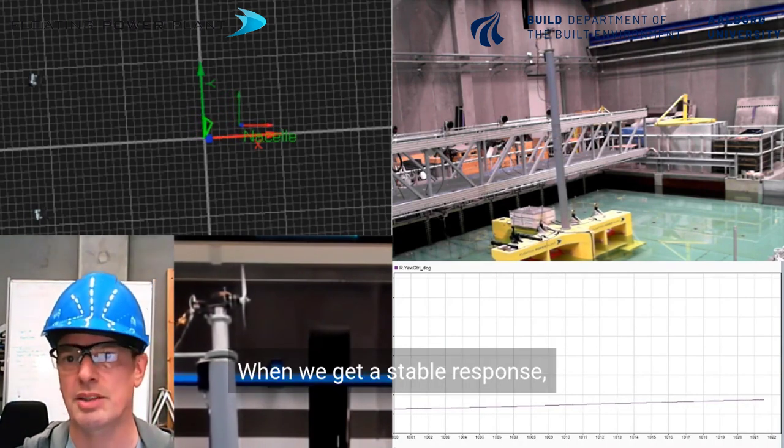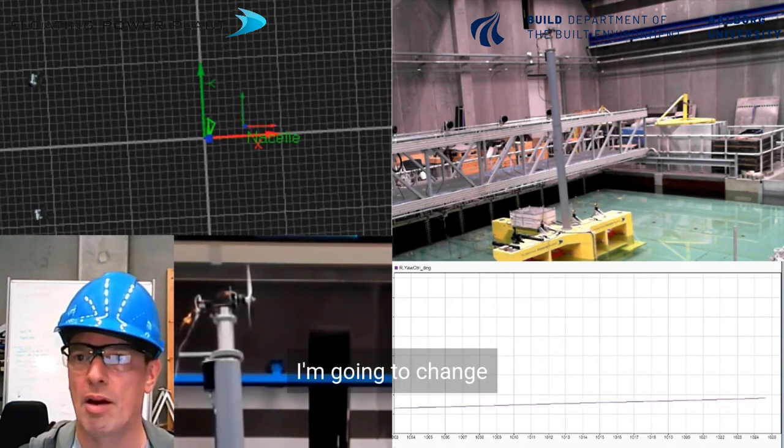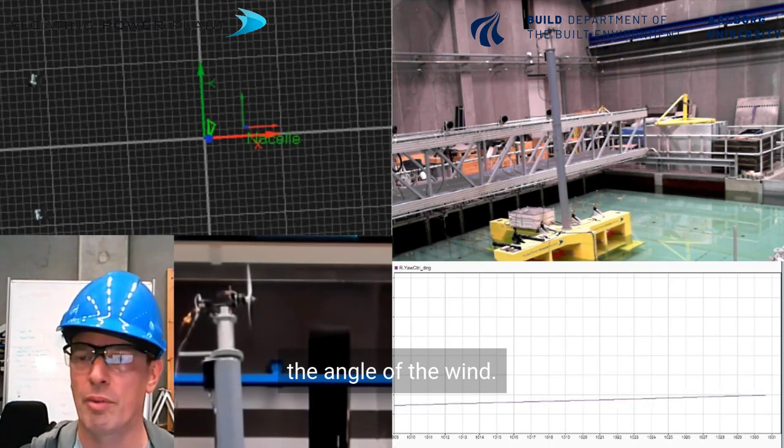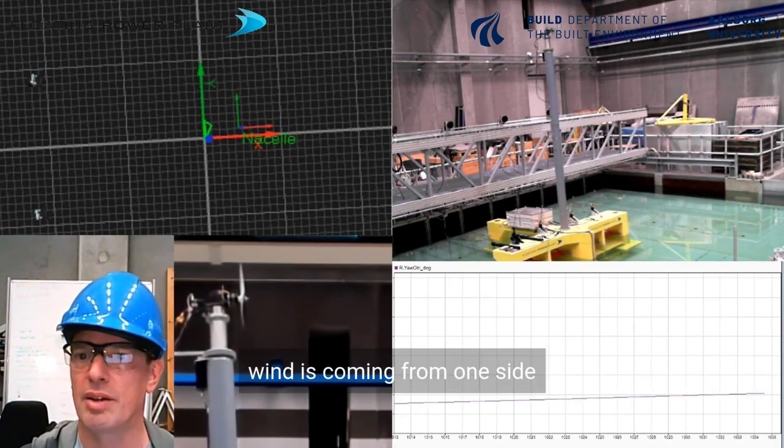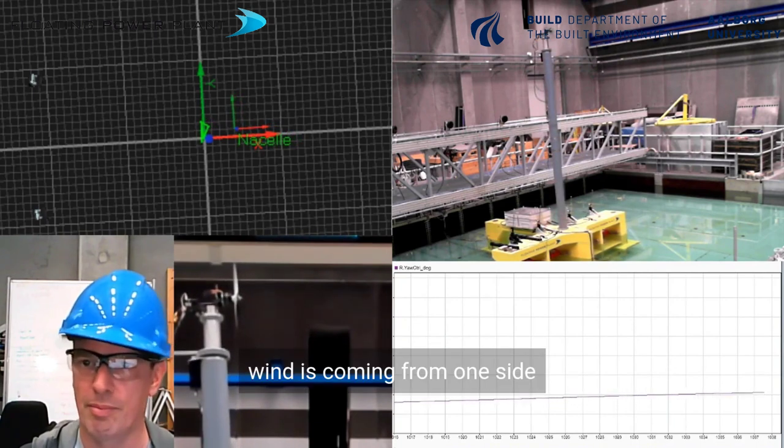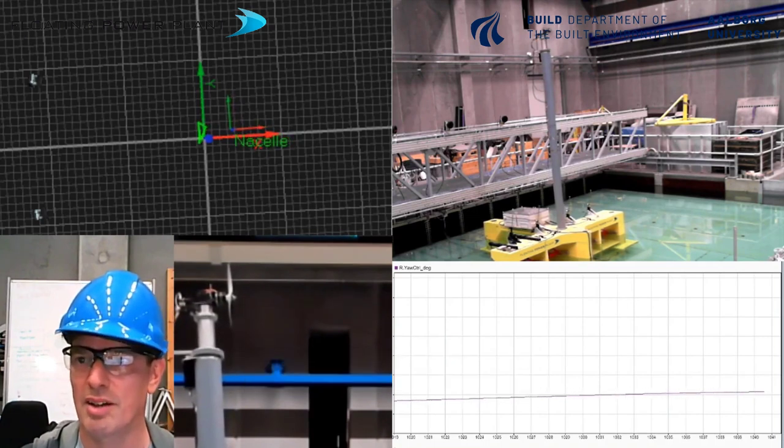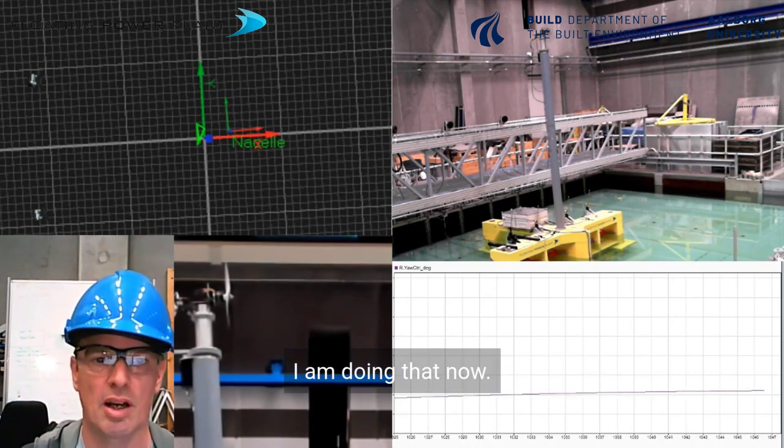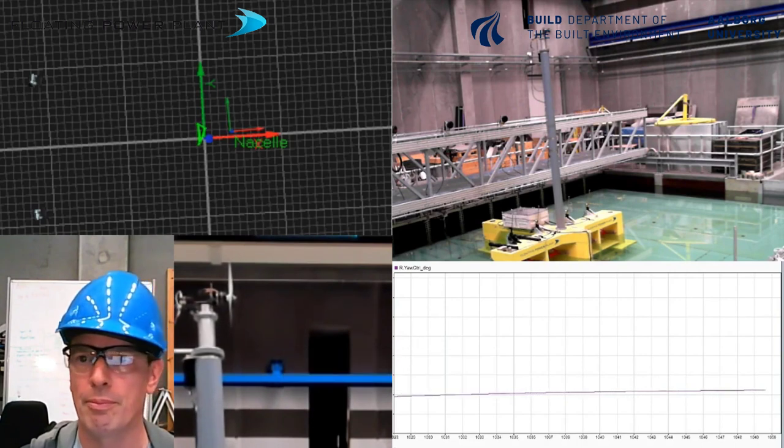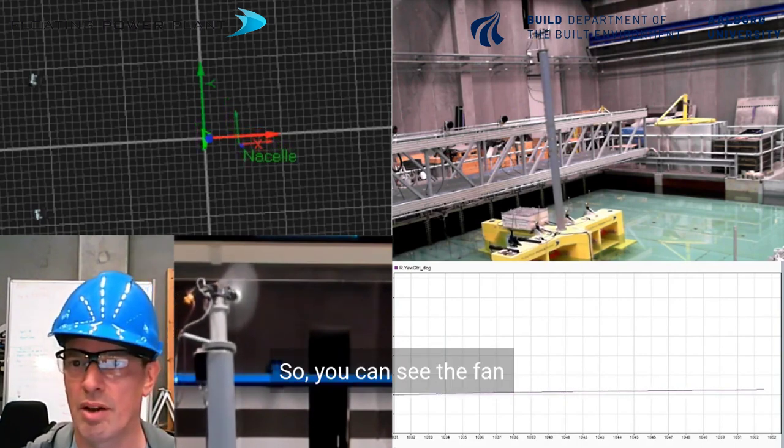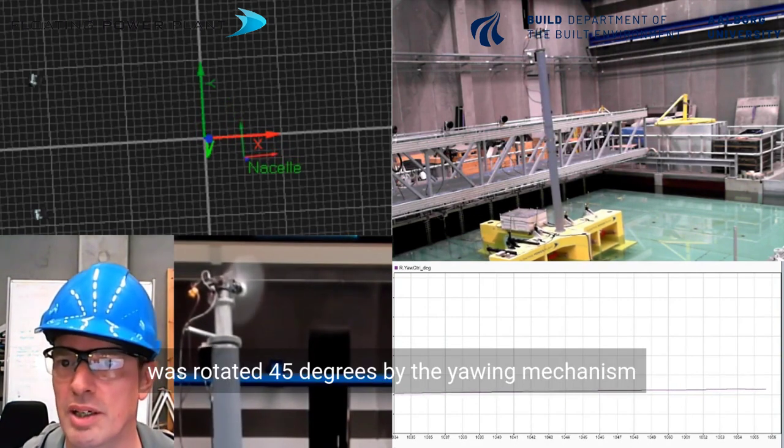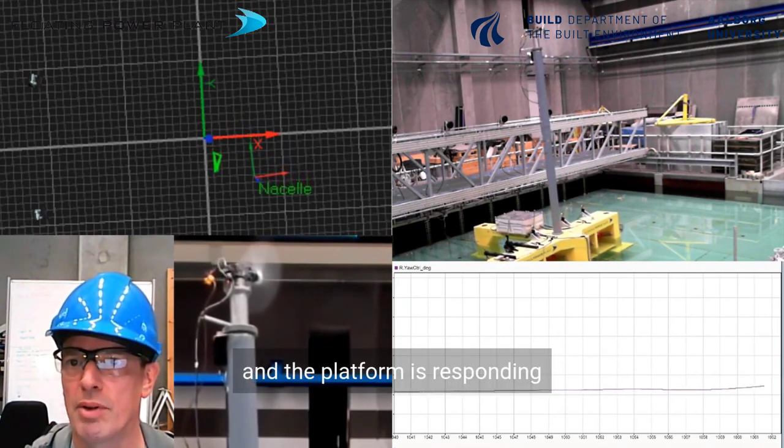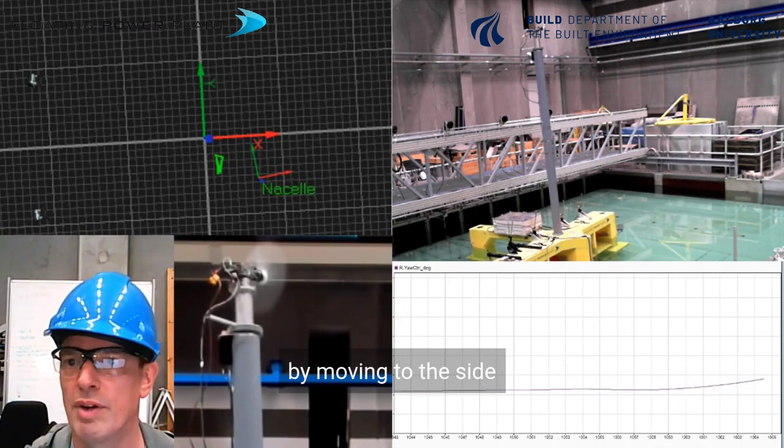When we get a stable response I'm going to change the angle of the wind. Right now the wind is coming from one side and then I'm going to turn the wind 45 degrees. I'm doing that now. You can see the fan was rotated 45 degrees by the yawing mechanism and the platform is responding by moving to the side.